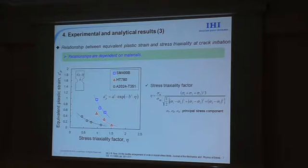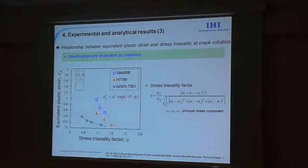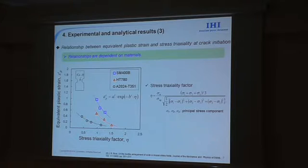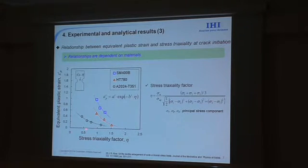I'll show you the conventional relationships between equivalent plastic strain and triaxiality at ductile crack initiation. For aluminum alloy, the location of ductile crack initiation was not clearly defined, but I evaluated it at the center of the notch section, as well as for steels. We can see the conventional relationships are dependent on materials.